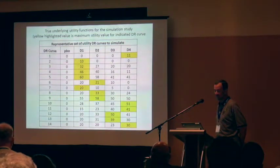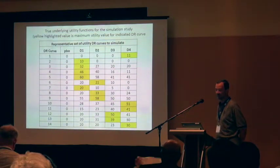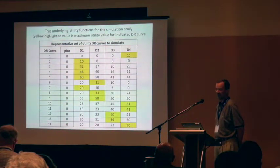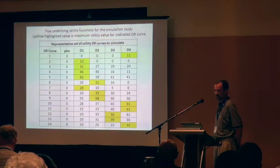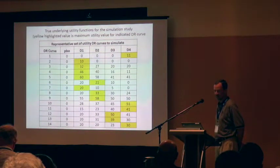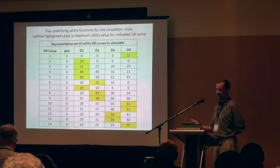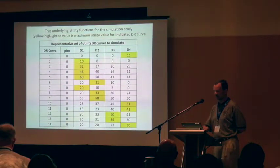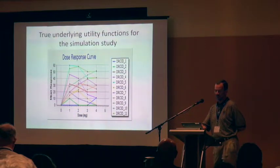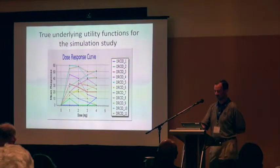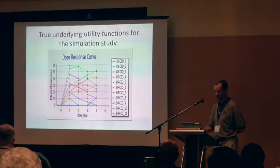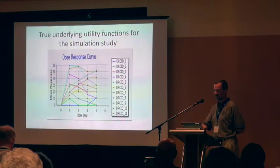These are the 14 curves we simulated. I've highlighted the value to indicate the dose that had the maximum clinical utility. They vary from doses with high clinical utility to doses with low clinical utility, covering a wide range of potential true underlying clinical utilities.